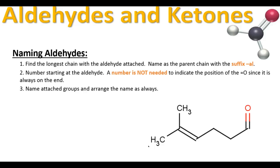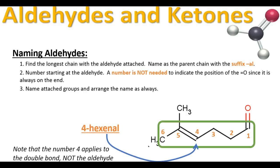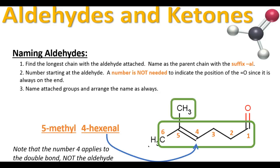Here's a slightly more complicated example — we're going to name the molecule at the bottom right. First, find the longest chain that contains the aldehyde. There are six carbons, making it a hex, but the difference here is it's not hexanal — it's hex-en-al, because we have a double bond along the chain. You do need a number in front to indicate the position of the double bond, not the aldehyde. There's also a methyl on carbon 5, so the final name is 5-methyl-4-hexenal.